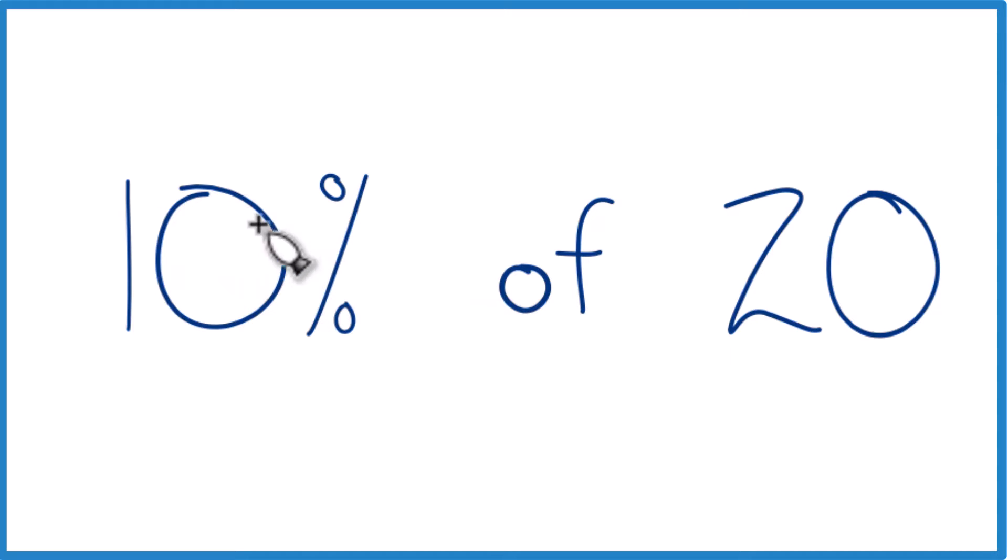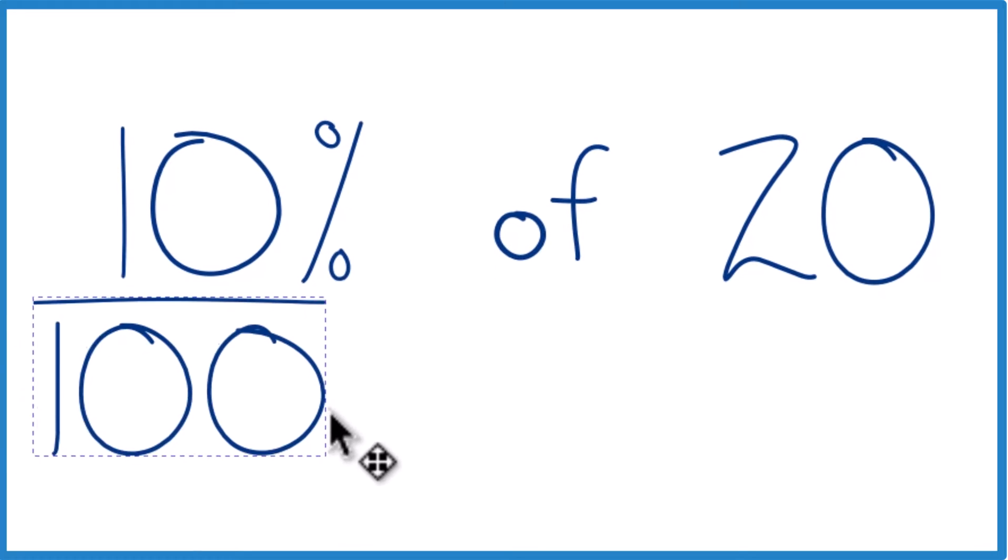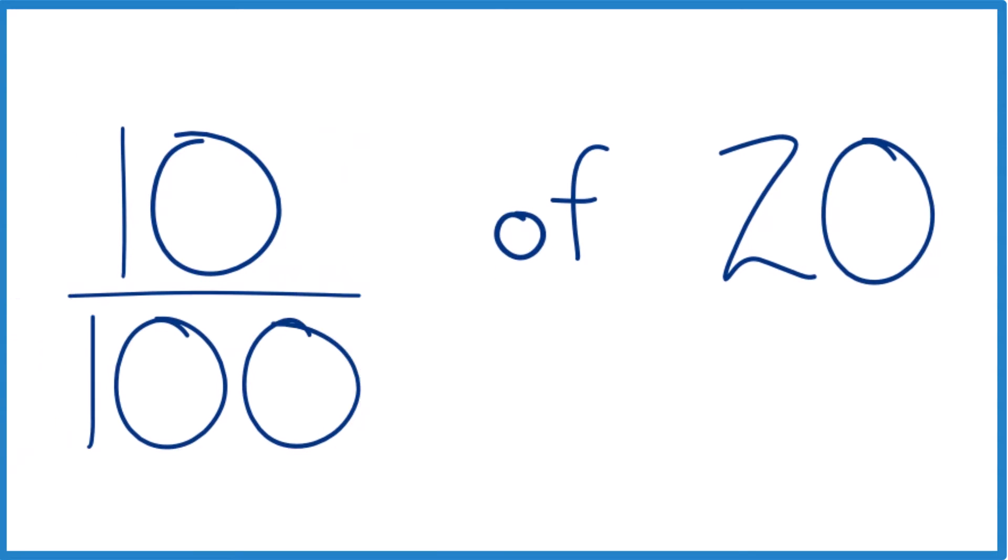First off, 10%, that's 10 out of 100, 10 parts per 100. So we could just divide 10 by 100, get rid of the percent, and of, of means multiply. So we're going to multiply.